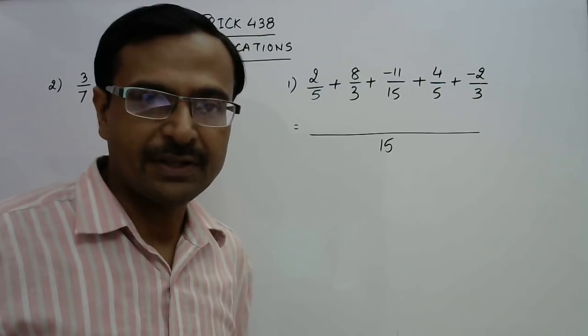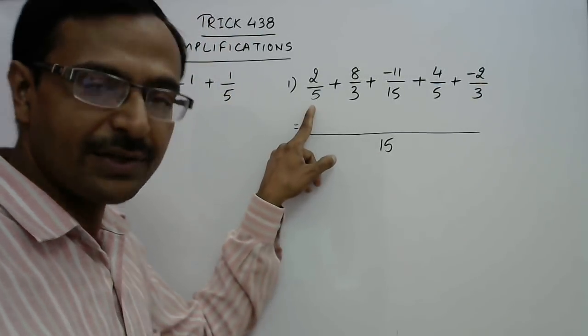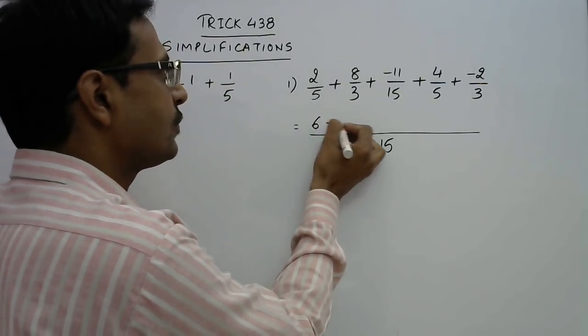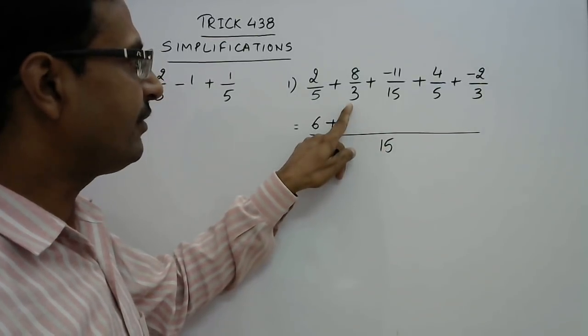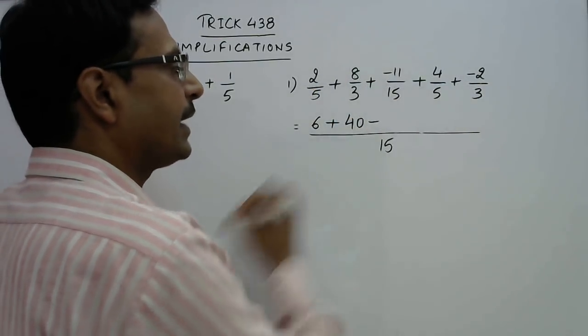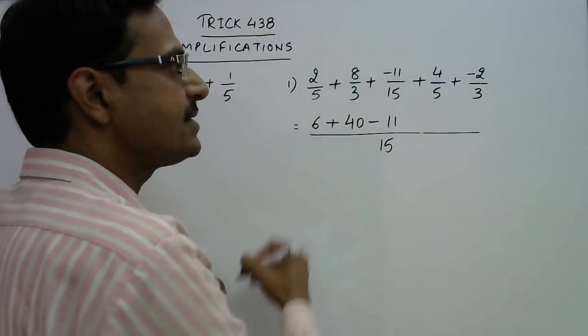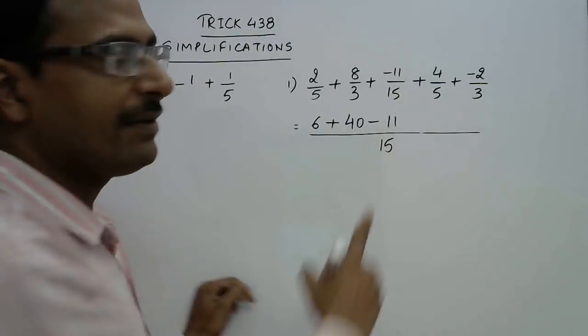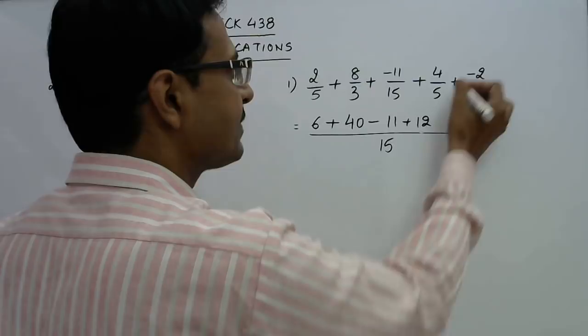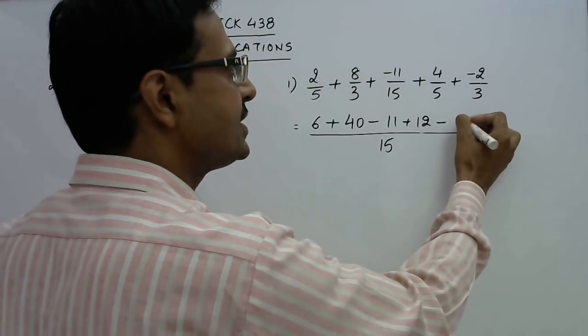And now traditional method will apply here. If you divide 15 by 5 you get 3 and multiply 3 by 2 you get 6. So we have plus. 15 divided by 3 is 5 and into 8 is 40 plus minus becomes minus. Again we have the same denominator so numerator will come as it is. 15 divided by 5 is 3 and 3 into 4 is 12. So this will be 12 and plus minus is minus. So 15 divided by 3 is 5, 5 into 2 is 10.